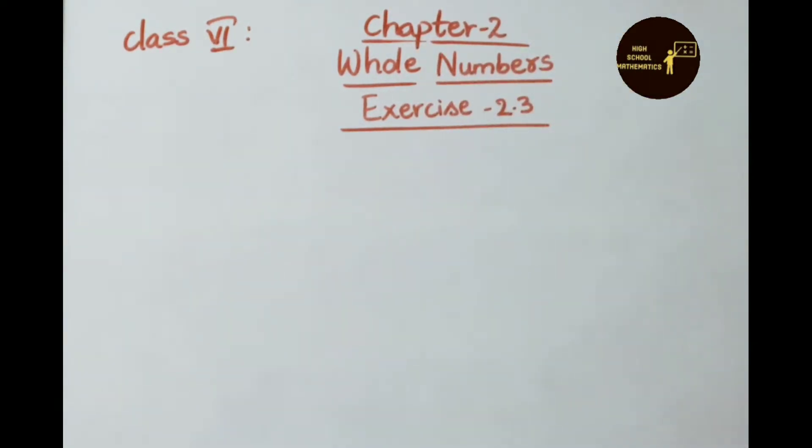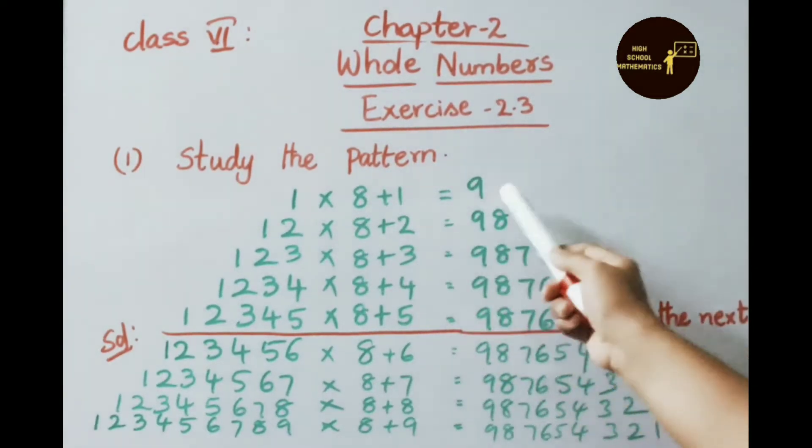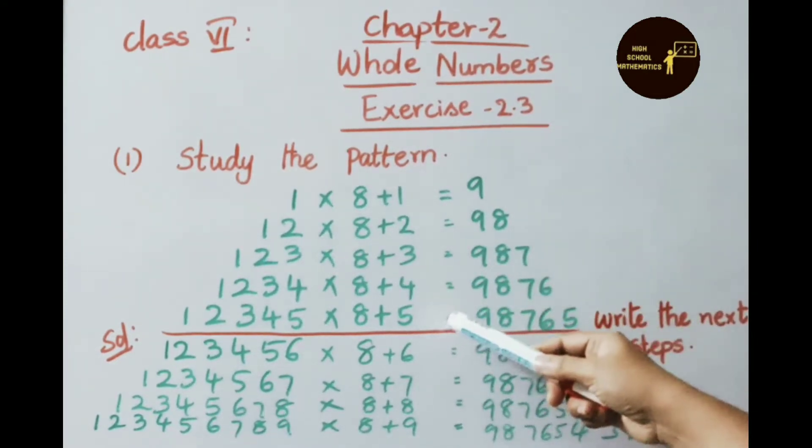In our first question, study the pattern: 1 × 8 + 1 equals 9, 12 × 8 + 2 equals 98, and so on up to 5 steps. They ask us to write the next four steps.